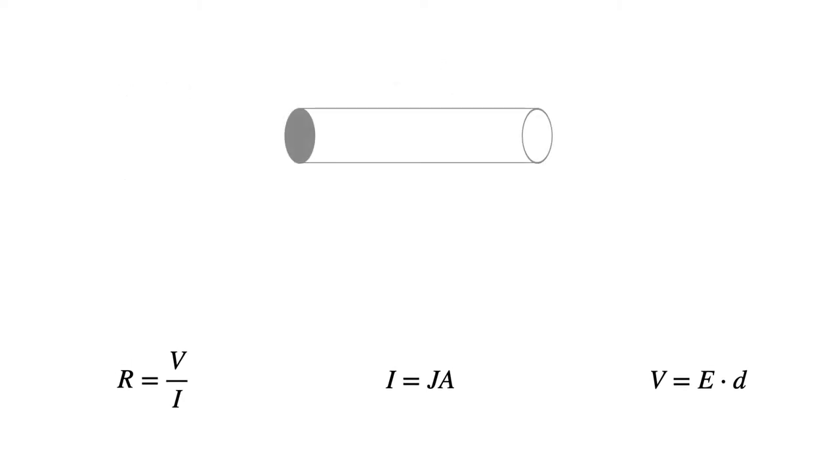Let's take a look at a section of wire. The wire has cross-sectional area A and length L. If we hook that up to a voltage source, that will produce a current in the wire.